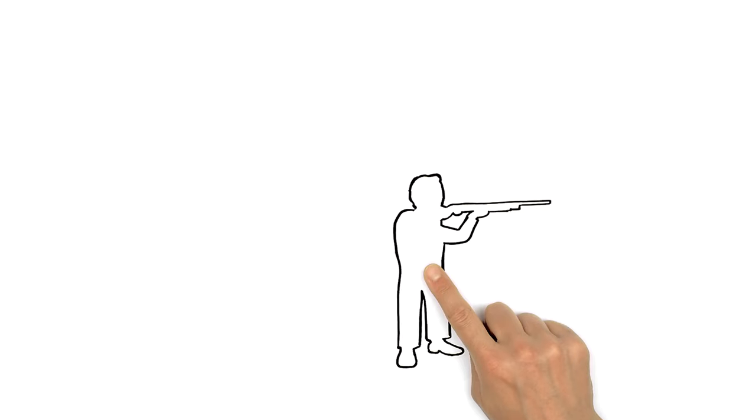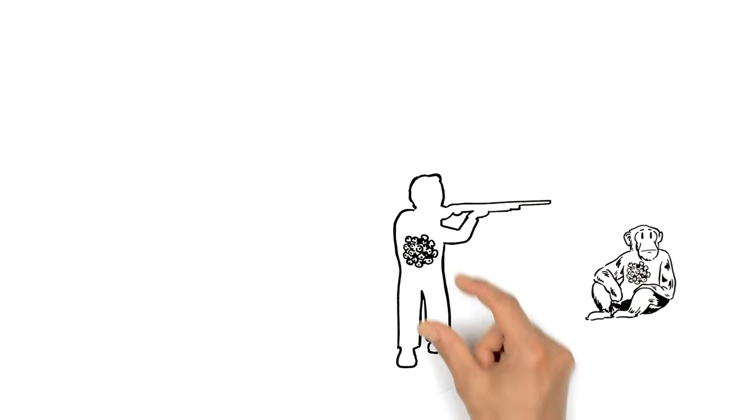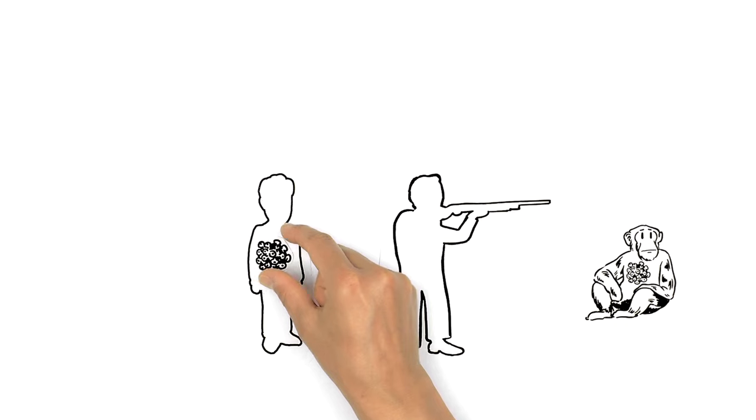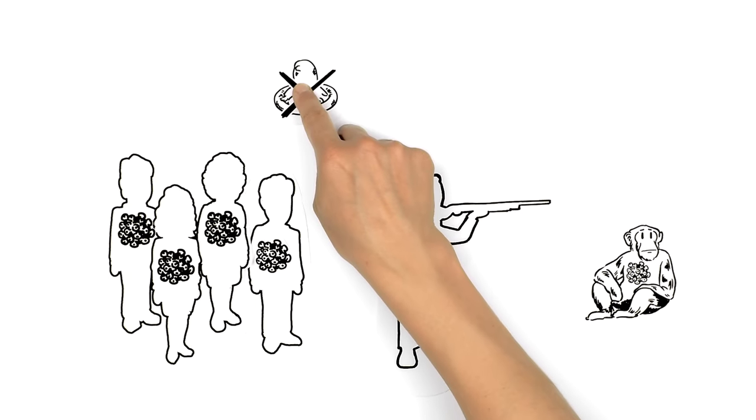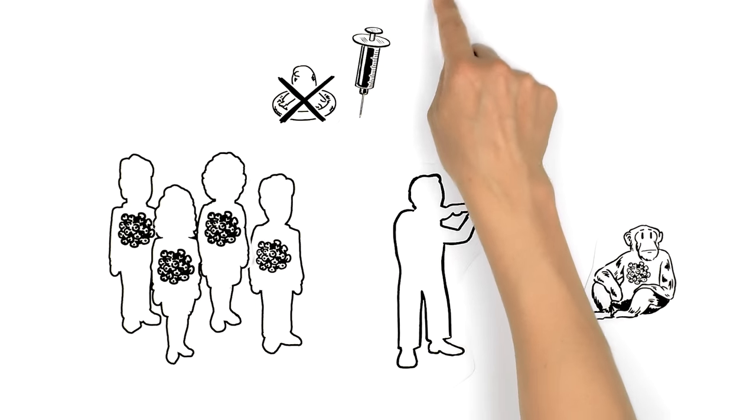Humans first acquired HIV from blood contact with apes, and gradually transmitted it to more people through unprotected sex, used syringes, and childbirth.